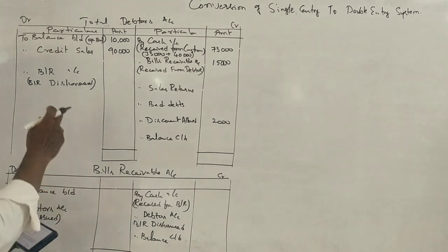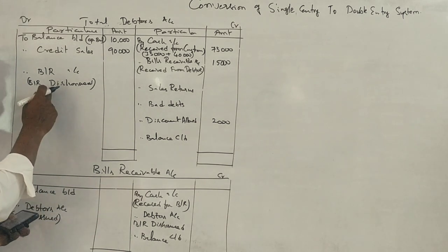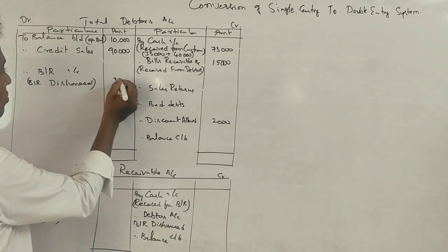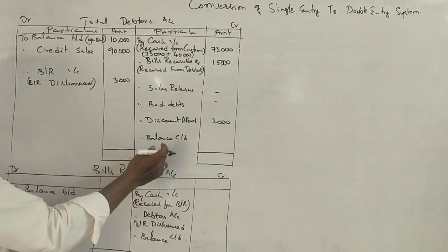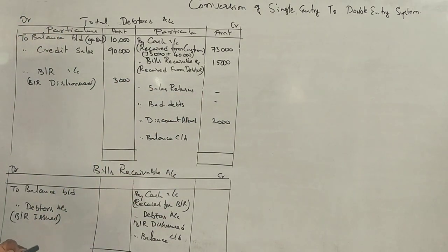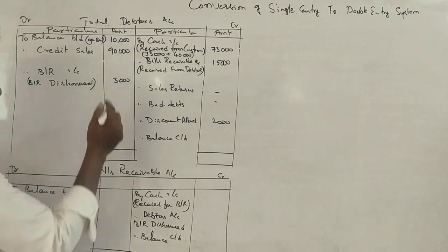Acceptance dishonored, Bills Received. Closing balance: 1,000.